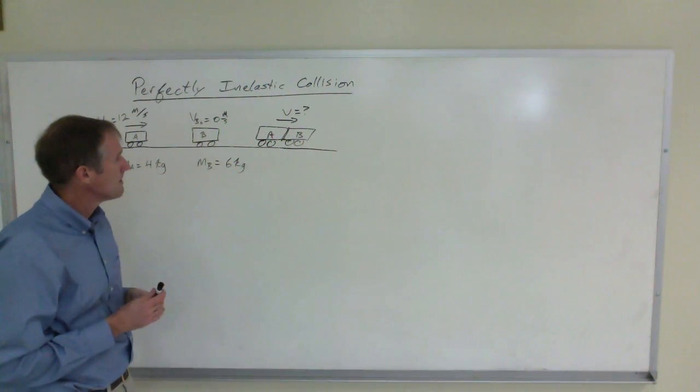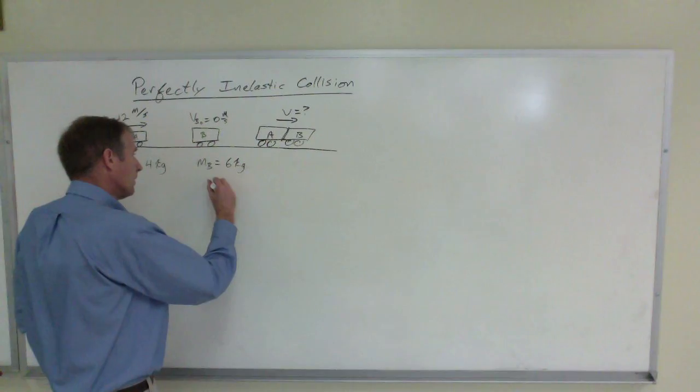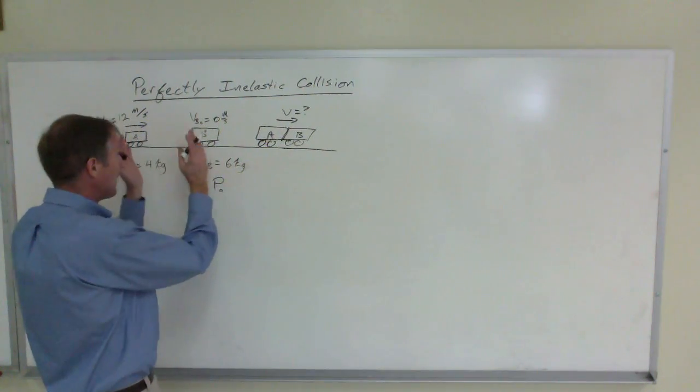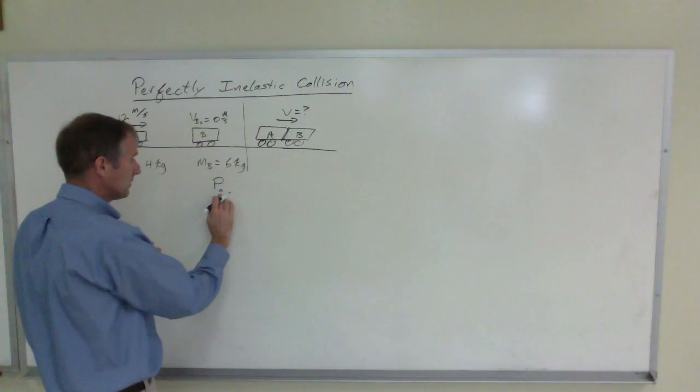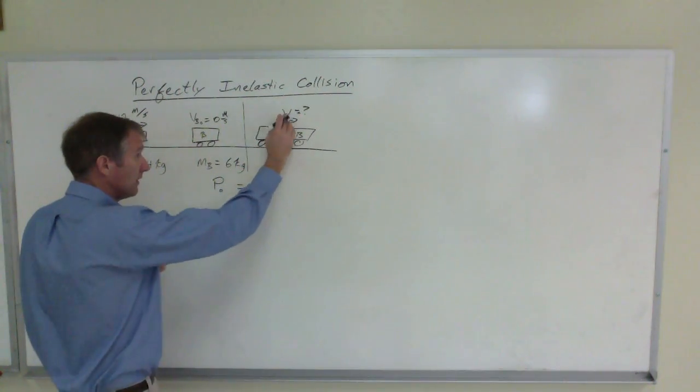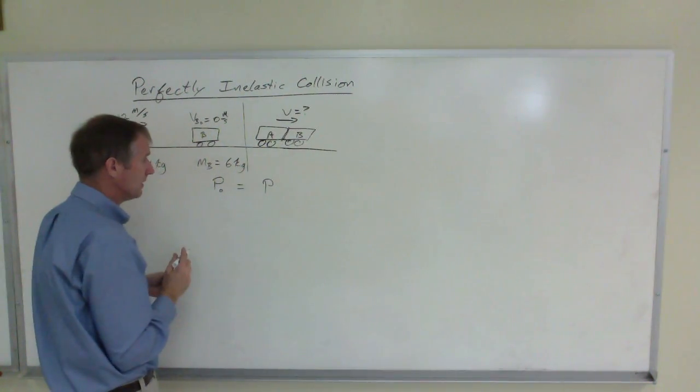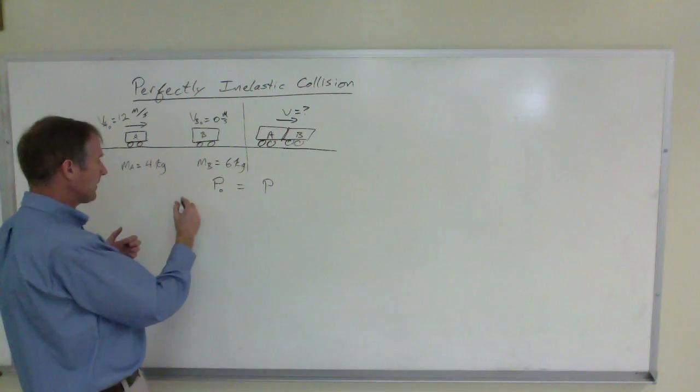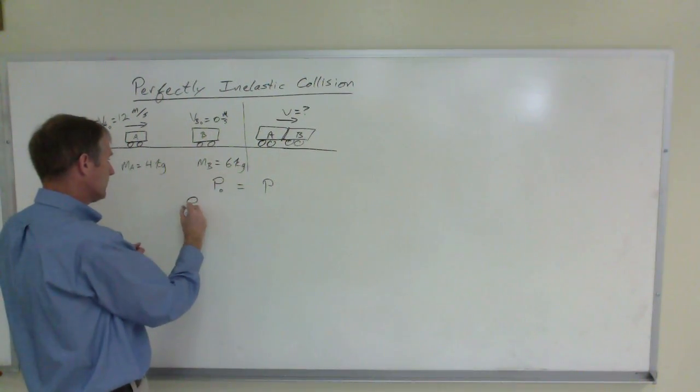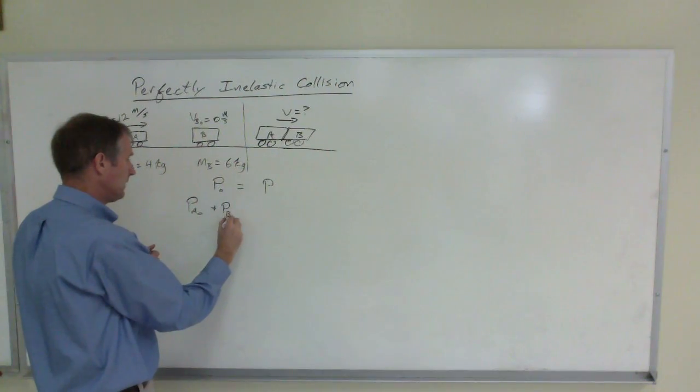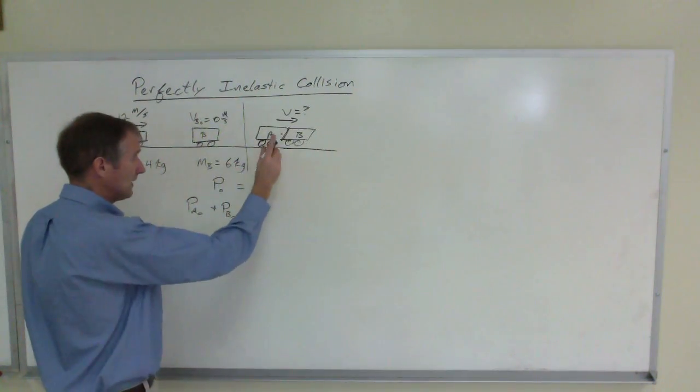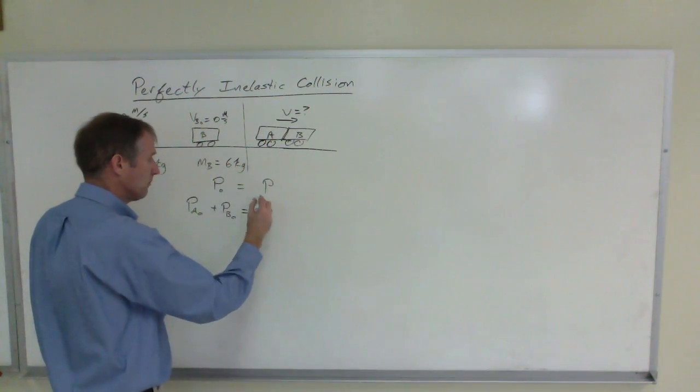So the initial momentum for the entire system—this is before and after—initial momentum for the entire system is P naught, then afterwards is P. Well, what makes up the initial momentum is made up of these two: that's the initial momentum of A plus the initial momentum of B, and then that's going to equal the final combined momentum of both of them.